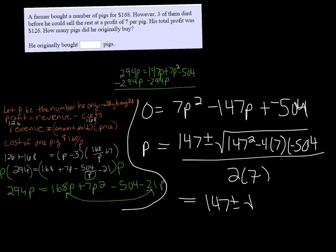So let's figure out what the inside of the square root is going to be. You do 147 squared, and we're going to do minus 4 times 7 times negative 504. Make sure that you put a negative in the 504 and not minus. And when I do that, I get 35,721, and 2 times 7 is 14.